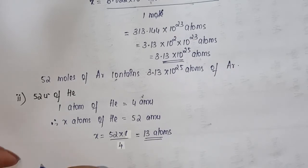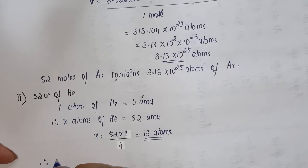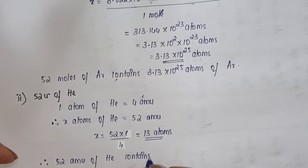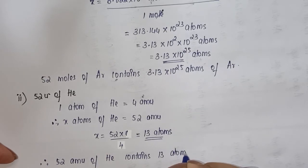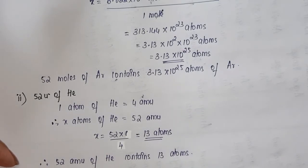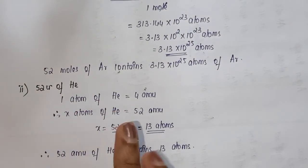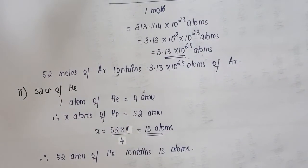Therefore, 52 amu of helium contains 13 atoms. It's an easy relation once you know how to approach any given question. There is one last part to this question, so let's calculate that as well.